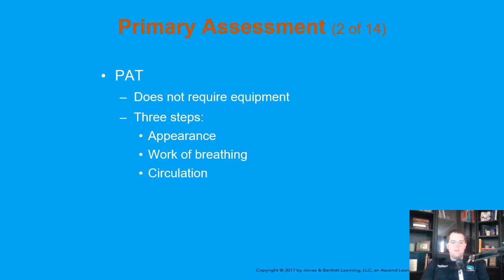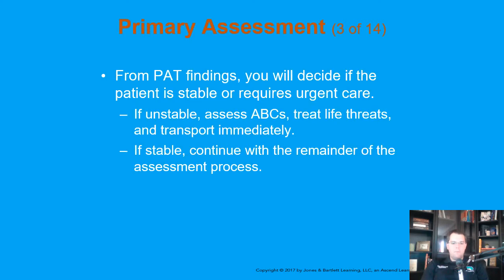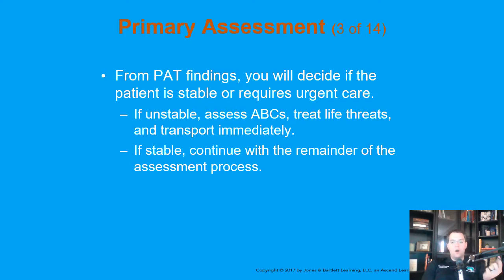The three steps are appearance, work of breathing, and circulation. From those findings, you will determine if the patient is stable or unstable. That's not to say other vital signs — actual pulse rate, oxygen saturation, blood pressure — are not important, but the primary assessment is done with the PAT first. Can you see if they're working hard to breathe? Is their mental status depressed? Are they showing skin signs of shock? If they're unstable, assess the ABCs further, treat any life threats, and transport immediately. If they're stable, you can remain on scene and continue your assessment.